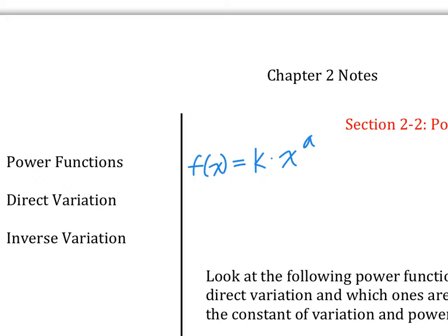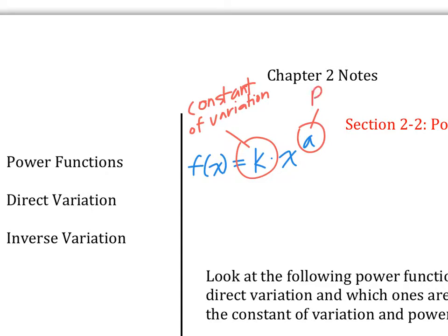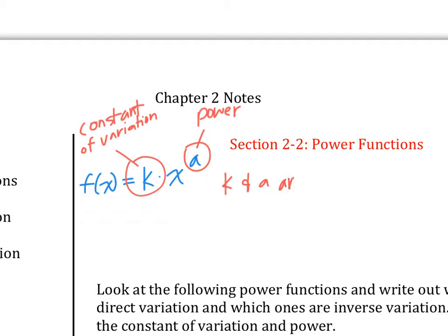You only have one term. In here, this is the constant — the constant of variation. This part is the power. And k and a are both non-zero. So it's going to be a constant, or coefficient, times x to a power.